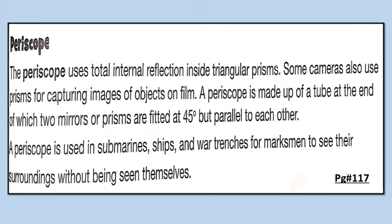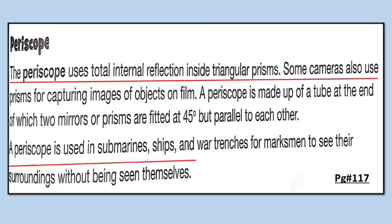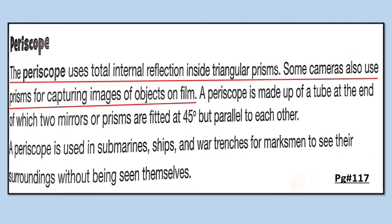Now move on to page number 117. The topic is periscope. A periscope uses total internal reflection inside a triangular prism. Some cameras also use prisms for capturing images of objects on film.